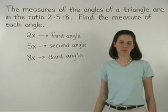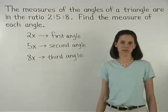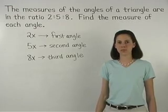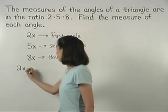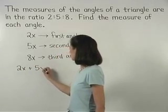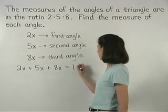Now, since the measures of the angles of a triangle add to 180 degrees, we can set up the equation 2x plus 5x plus 8x equals 180.